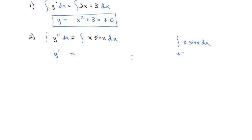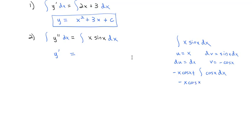It's a product, so that makes me think I'm going to do integration by parts where u is equal to x and dv is sine of x dx. That's going to make du equal to just dx and v equal to negative cosine of x. So this is going to be u times v — negative x cosine x — minus the integral of v du, which brings out negative cosine of x dx. Integrating gives negative x cosine x plus sine of x plus a constant.